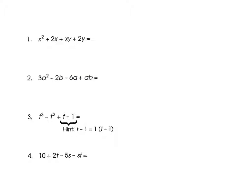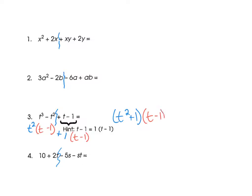Okay, here are the classwork examples — turn your paper over. I want to do number 3 because it has a hint. Cut it in half: you get t² and then t minus 1. The hint says t minus 1 is the same as 1 times t minus 1, so put plus 1 and keep t minus 1. Make your t's look different from plus signs. My answer: t² plus 1 in one set of parentheses times t minus 1.